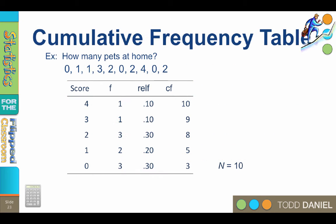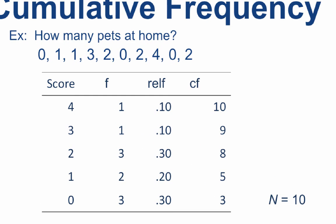Returning to our pets data, the first cumulative frequency value will be the same as the frequency value for the smallest score in our data. In this case, 0 has a frequency of 3, so that is our first cumulative frequency value. Remember that we are starting at the bottom of the cumulative frequency column this time.